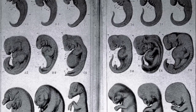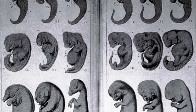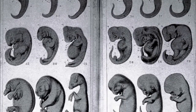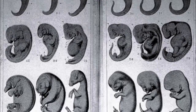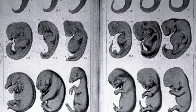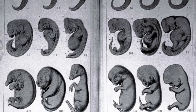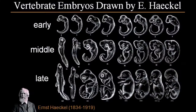In fact, he thought that the early stages show us the form of the ancestor in its original form. Ernst Haeckel made some drawings based on this idea — that embryos are most similar in their earliest stages and become different only later on — and these drawings became quite famous.